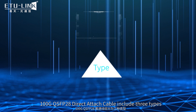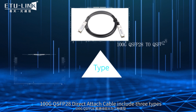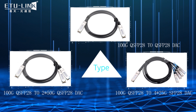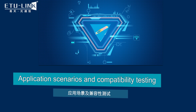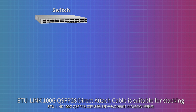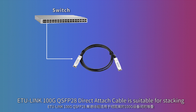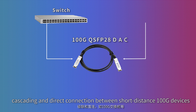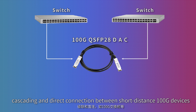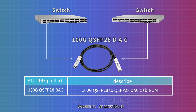The 100GB QSFP28 direct-attached cable includes three types. ETU Link 100GB QSFP28 direct-attached cable is suitable for stacking, cascading, and direct connection between short-distance 100GB devices such as 100GB switches.